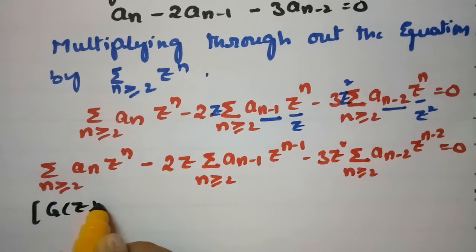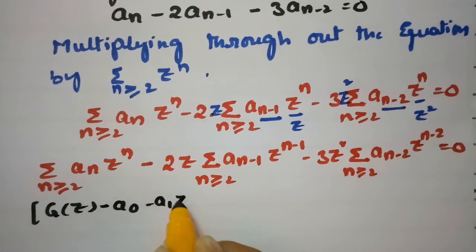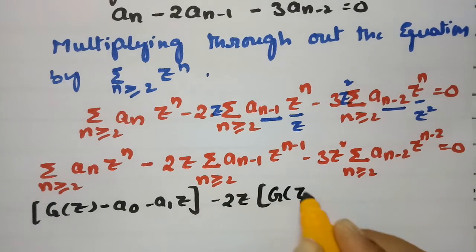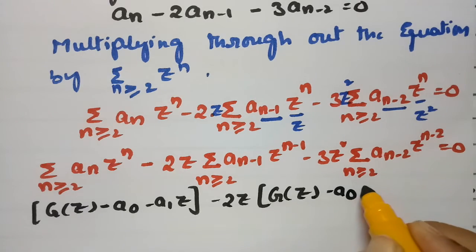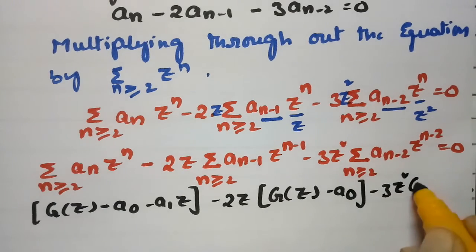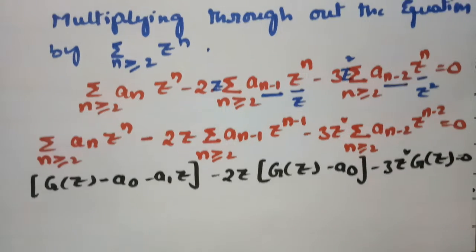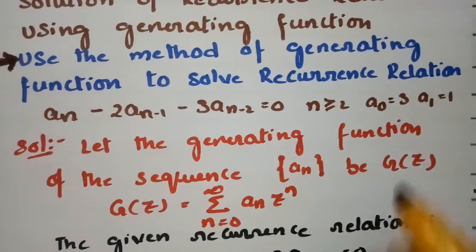Applying the generating function definition, this becomes: G(z) minus a₀ minus a₁z, minus 2z times (G(z) minus a₀), minus 3z² times G(z), equals 0.